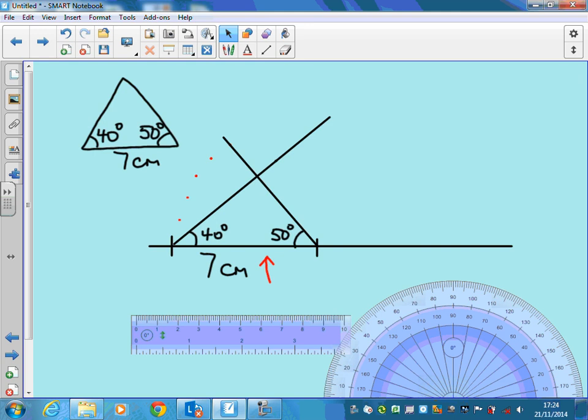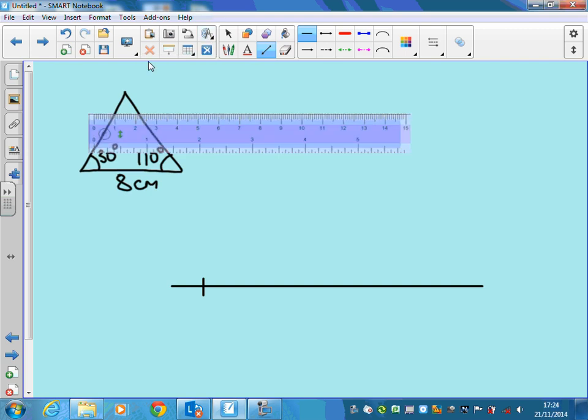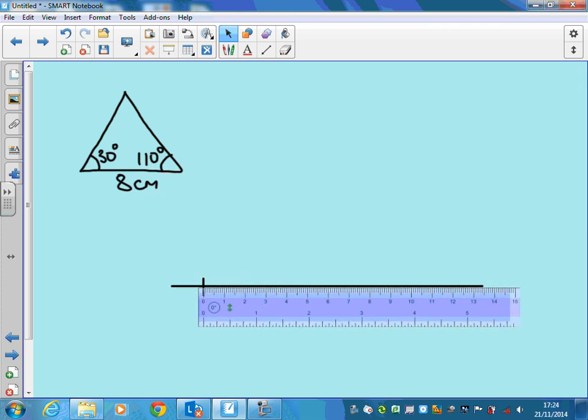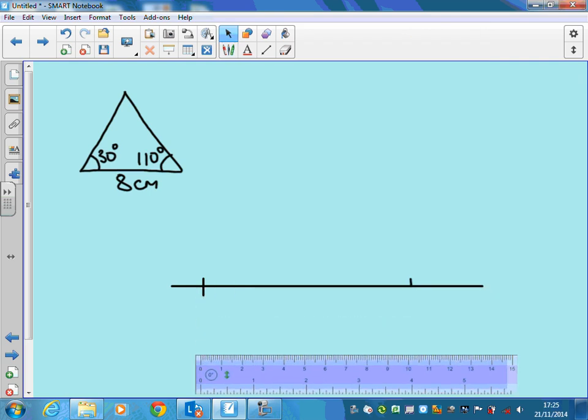Let's do another example where we need to put more thought into the lines we draw. We've got an eight-centimeter line with two angles, 30 and 110 degrees. Draw a line longer than the needed length, mark a point, get your ruler, and mark another spot 10 centimeters away. Label it 10 centimeters. Now we need to do the 30-degree angle and the 110-degree angle.